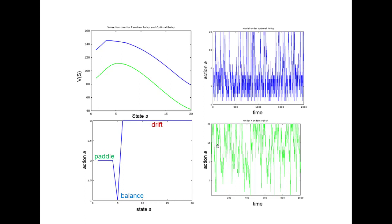We're looking at the optimal policy compared to a random policy. Under the random policy, you're all over the place — you come close to the waterfall and drop down, then start all over again. If you apply the optimal policy, you spend much more time closer to the waterfall, but you cannot completely prevent yourself from dropping down. You obviously collect more rewards with the optimal policy. The value function of the optimal policy shows quite high rewards and indicates it's optimal to stay around five steps away from the waterfall.